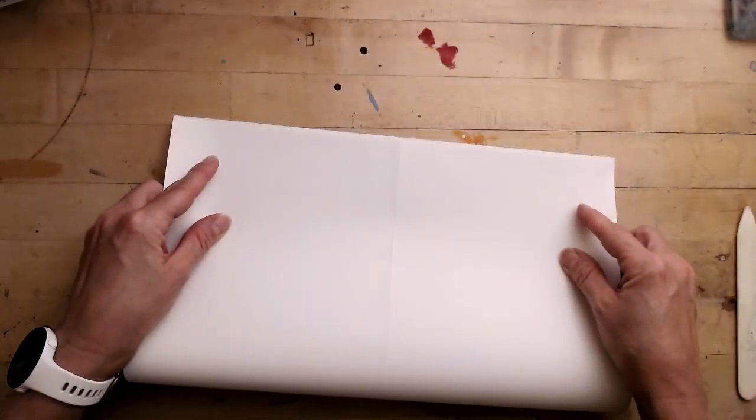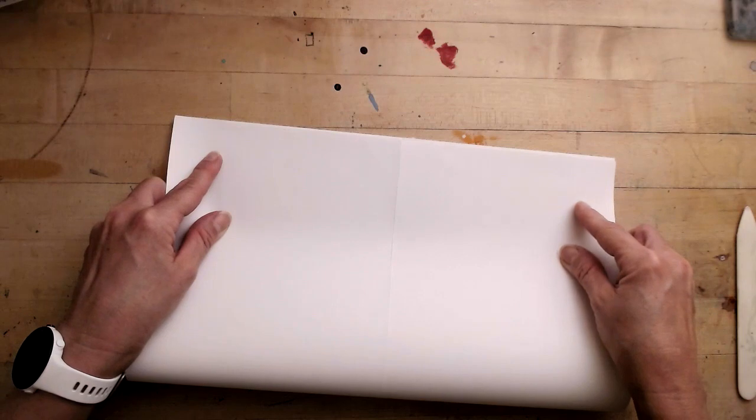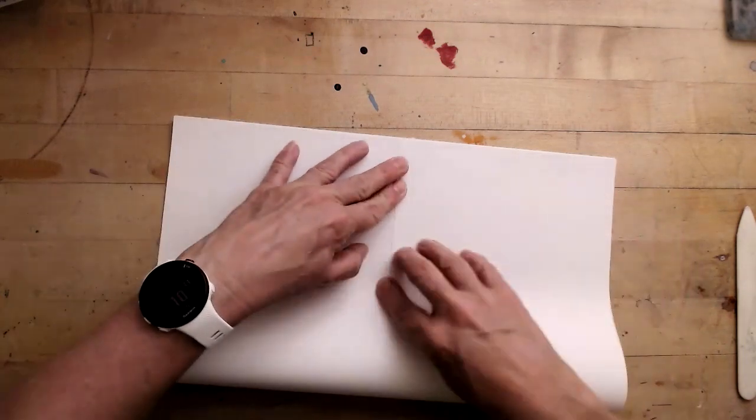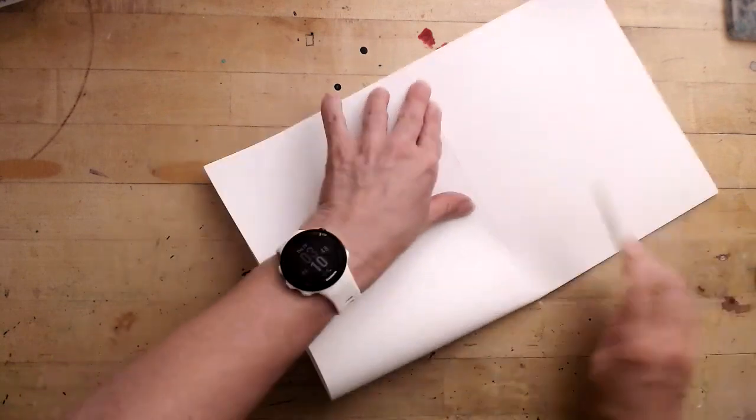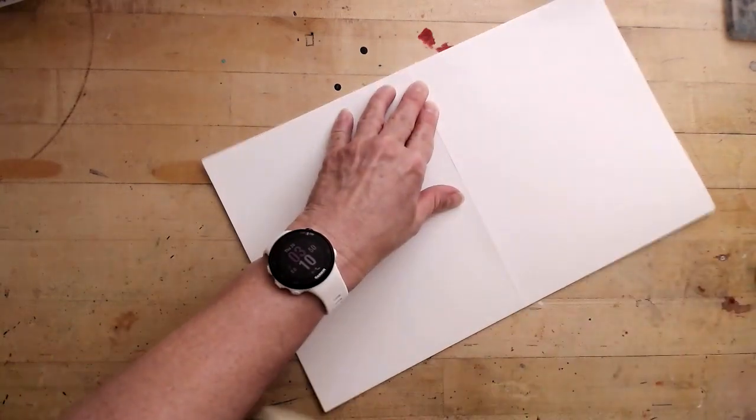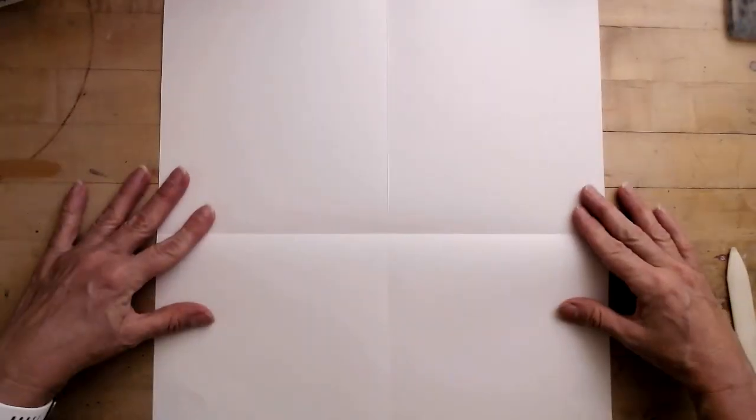Now I'm going to unfold it and turn it and I'm going to fold the short sides together. So I'm folding it in half short side to short side. I'm going to unfold that and now the paper is divided into quarters.